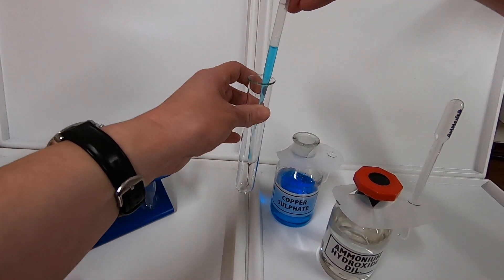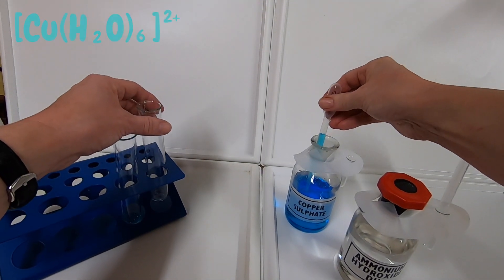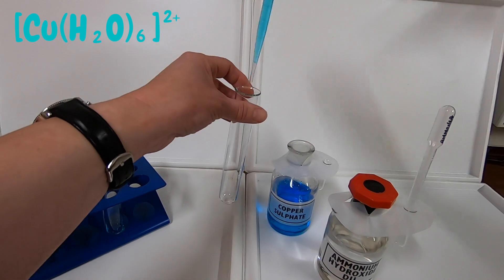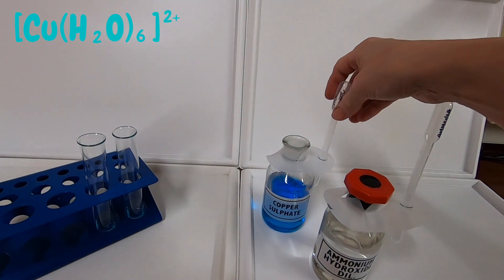In this video, we are going to use aqueous ammonia to demonstrate ligand replacement in hexa aqua copper two ions. Those hexa aqua copper two ions are found in the copper sulfate solution.